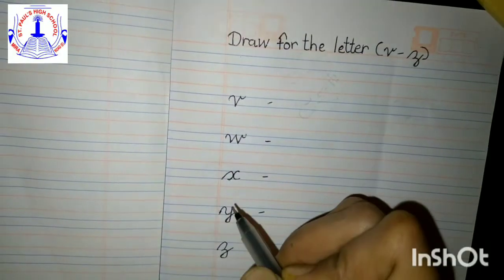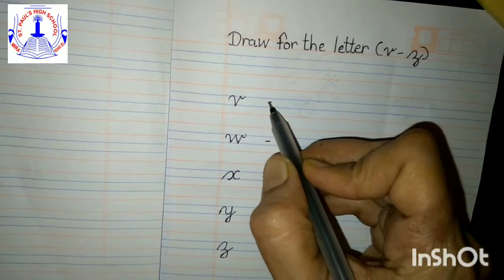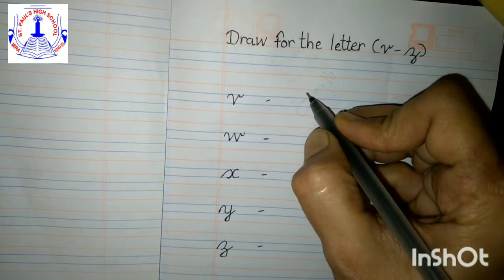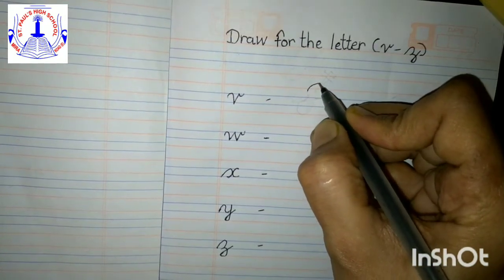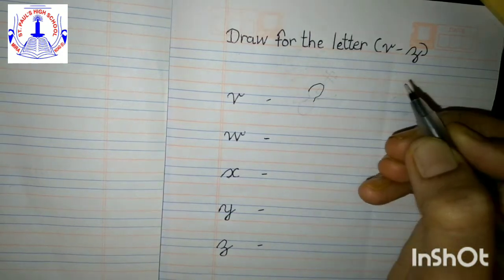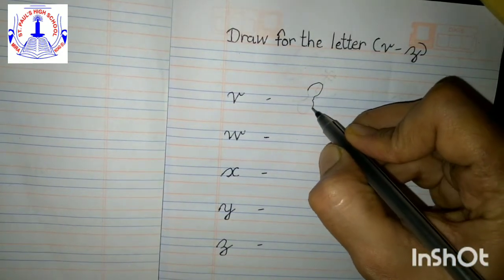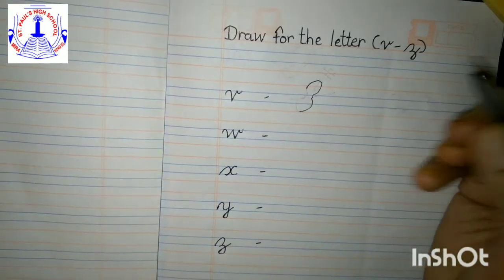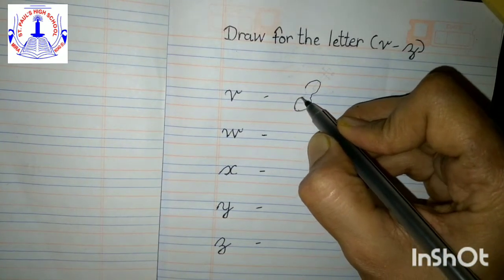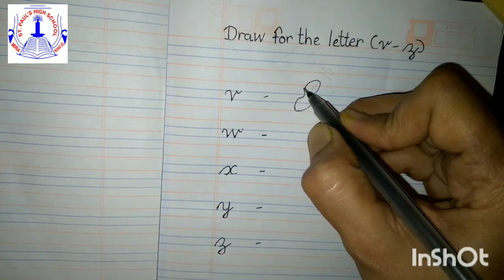Draw for the letter V to Z. First is cursive V, so make a curve from up side and then make a reverse curve. Something like this.